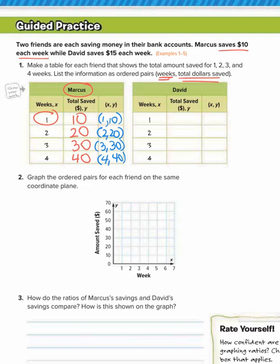Now David saves $15 each week. So David on week 1 saves $15. So that means for week 2, he has $30 saved. By week 3, $45. And by week 4, $60. So now we're going to write these as ordered pairs.